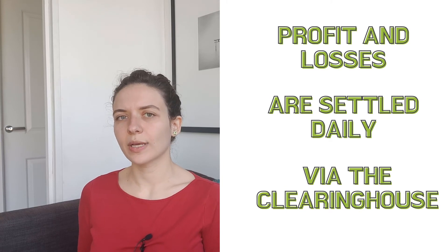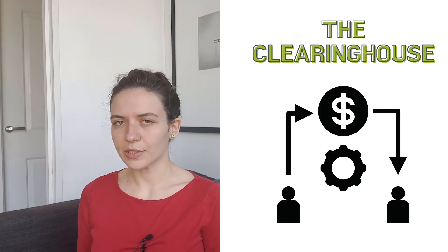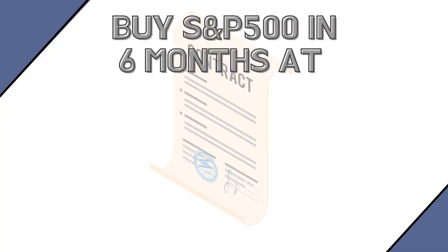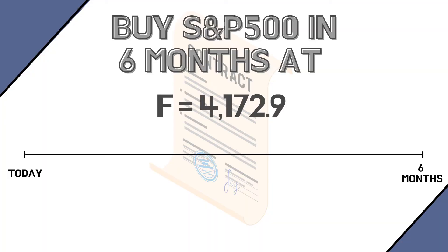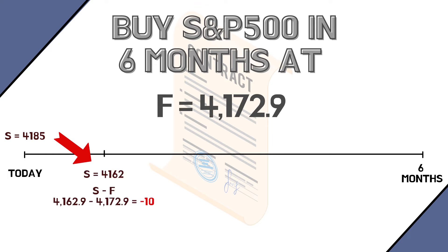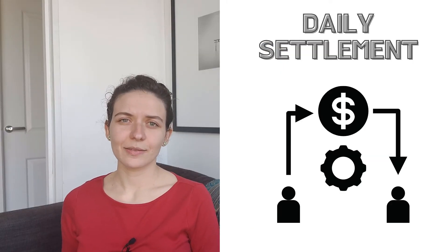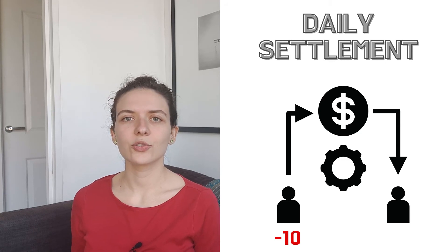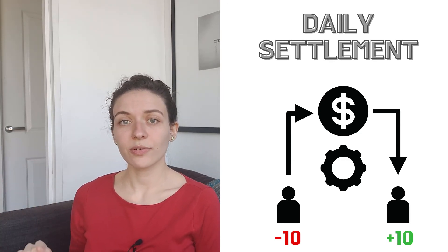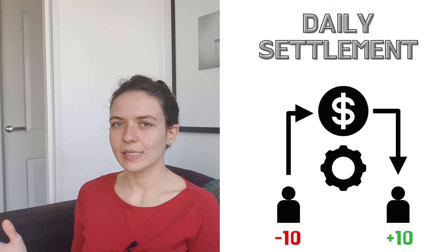Profits and losses are settled daily thanks to the clearinghouse. The clearinghouse is the financial intermediary responsible for marking the futures to market every day. Imagine that we entered as the buyer in this future on the S&P at a price of 4172, and after a few days the index crashes from 4185 to 4162. Since the spot has moved below the future, we will have made a loss as buyers. The clearinghouse takes those losses from our account to reflect that our position is losing money, even though the delivery date is in six months. It will take money out of our account and put it into our counterparty's — the sellers' — account, to reflect that their position is instead winning because the S&P is trading downwards.